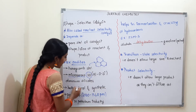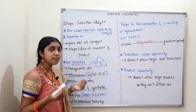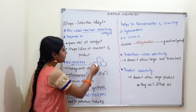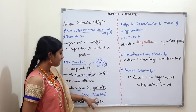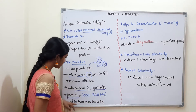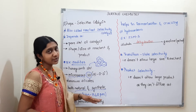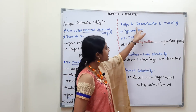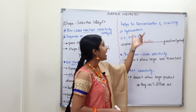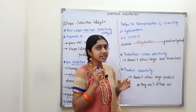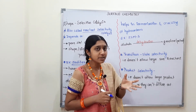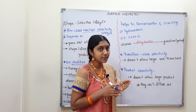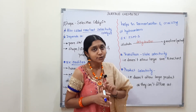Zeolites have a honeycomb structure with a microporous 3D AlOSi framework. They are both natural and synthetic — we can prepare them in the lab. The pore size of zeolites ranges from 260 to 740 picometers. Uses of zeolites include the formation of isomers and the cracking of hydrocarbons.